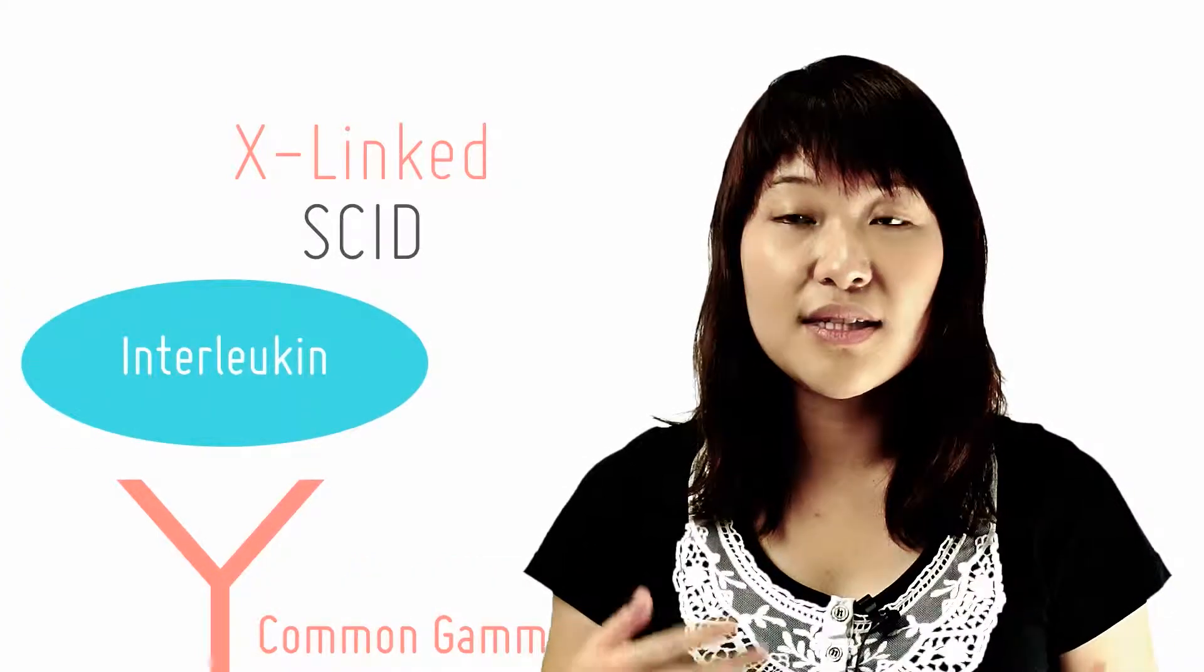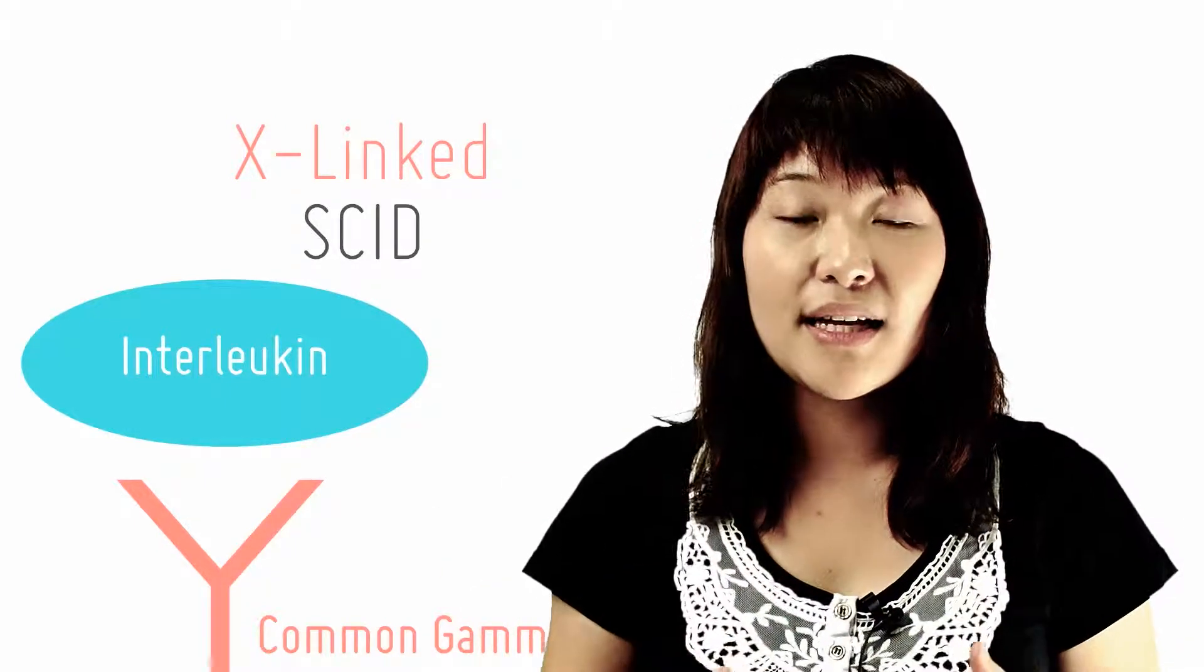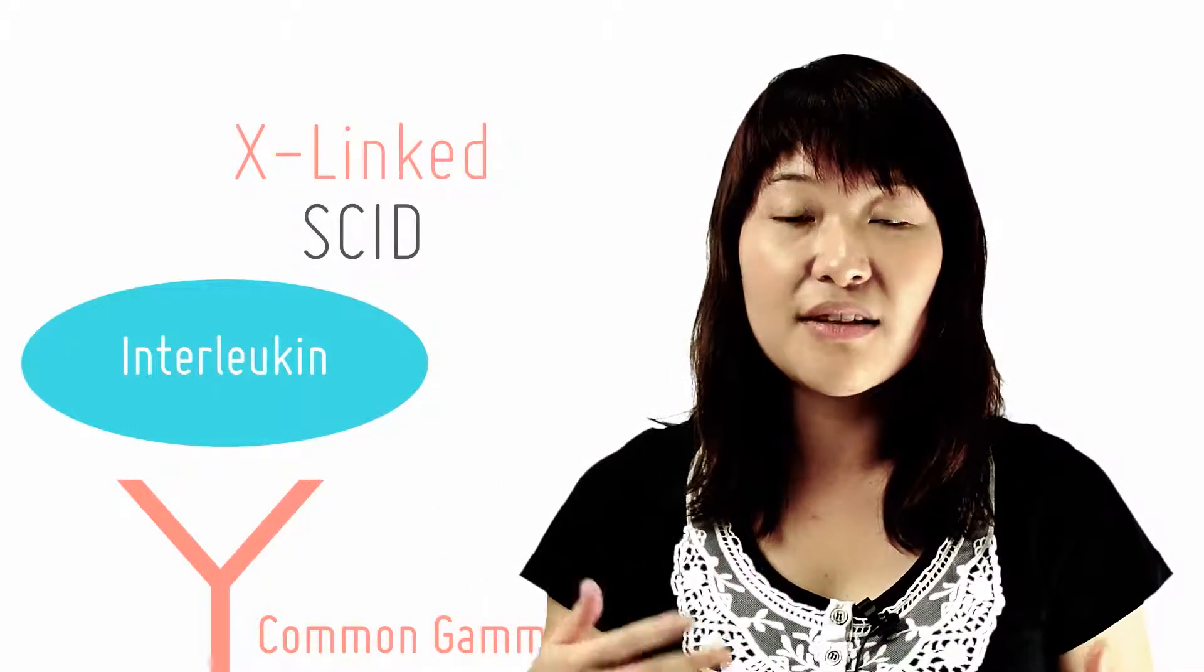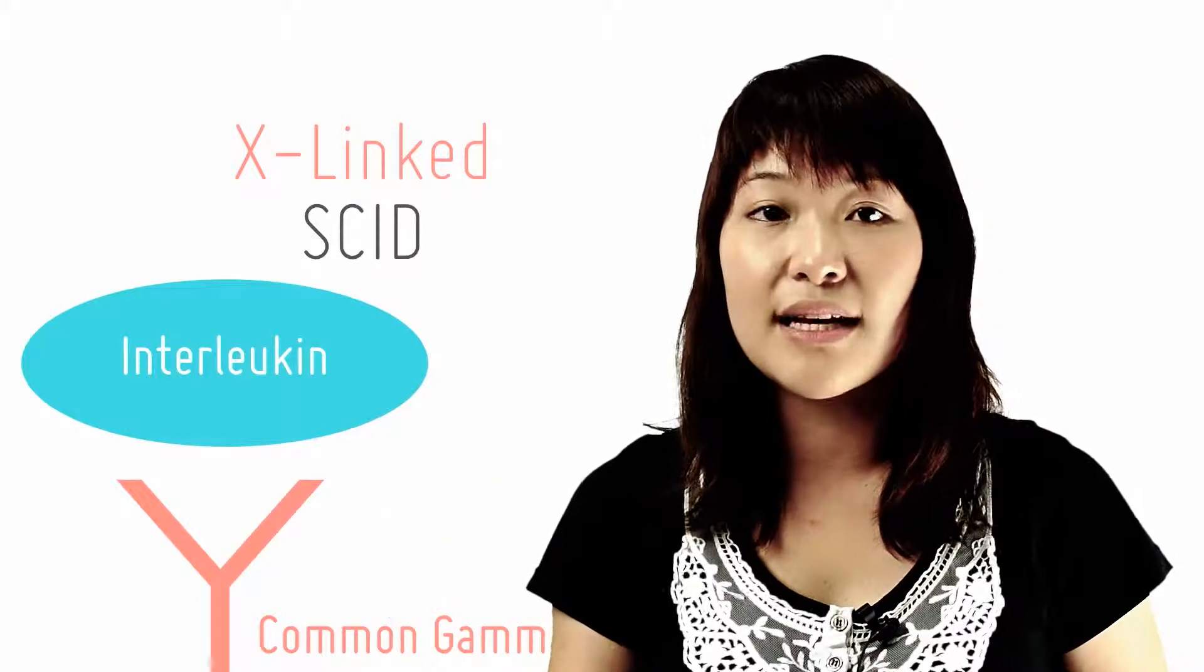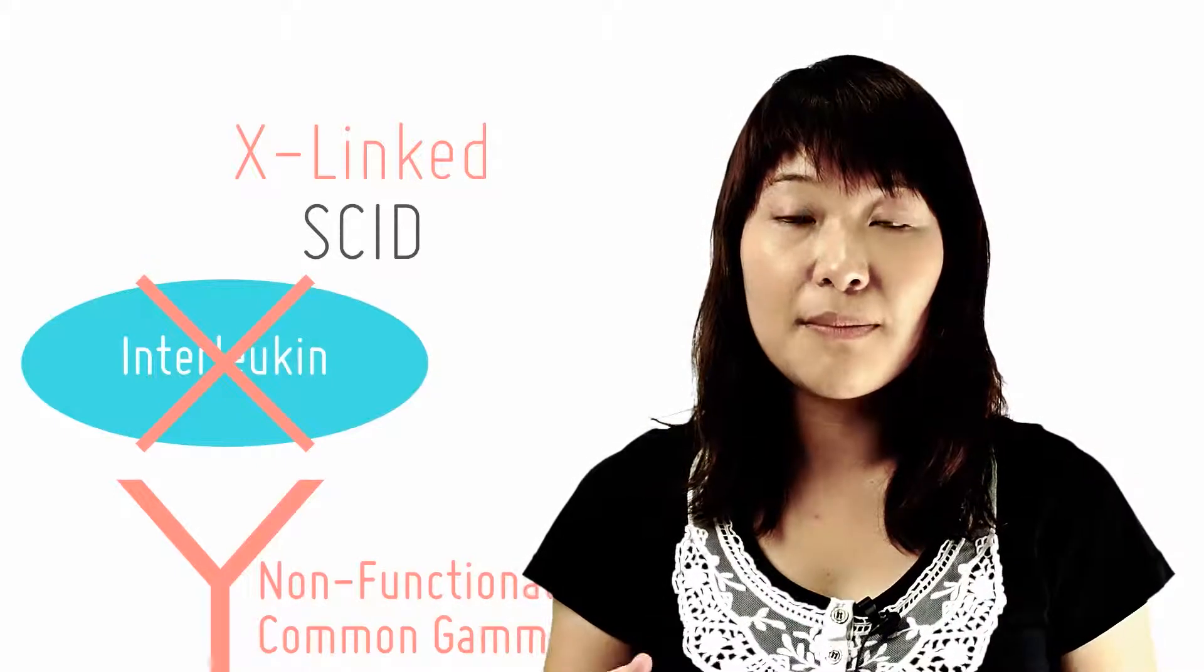Interleukins are proteins produced naturally by our bodies to stimulate our immune systems and are involved in the development and differentiation of T and B cell lymphocytes. Without them, maturation of these immune cells would not take place.